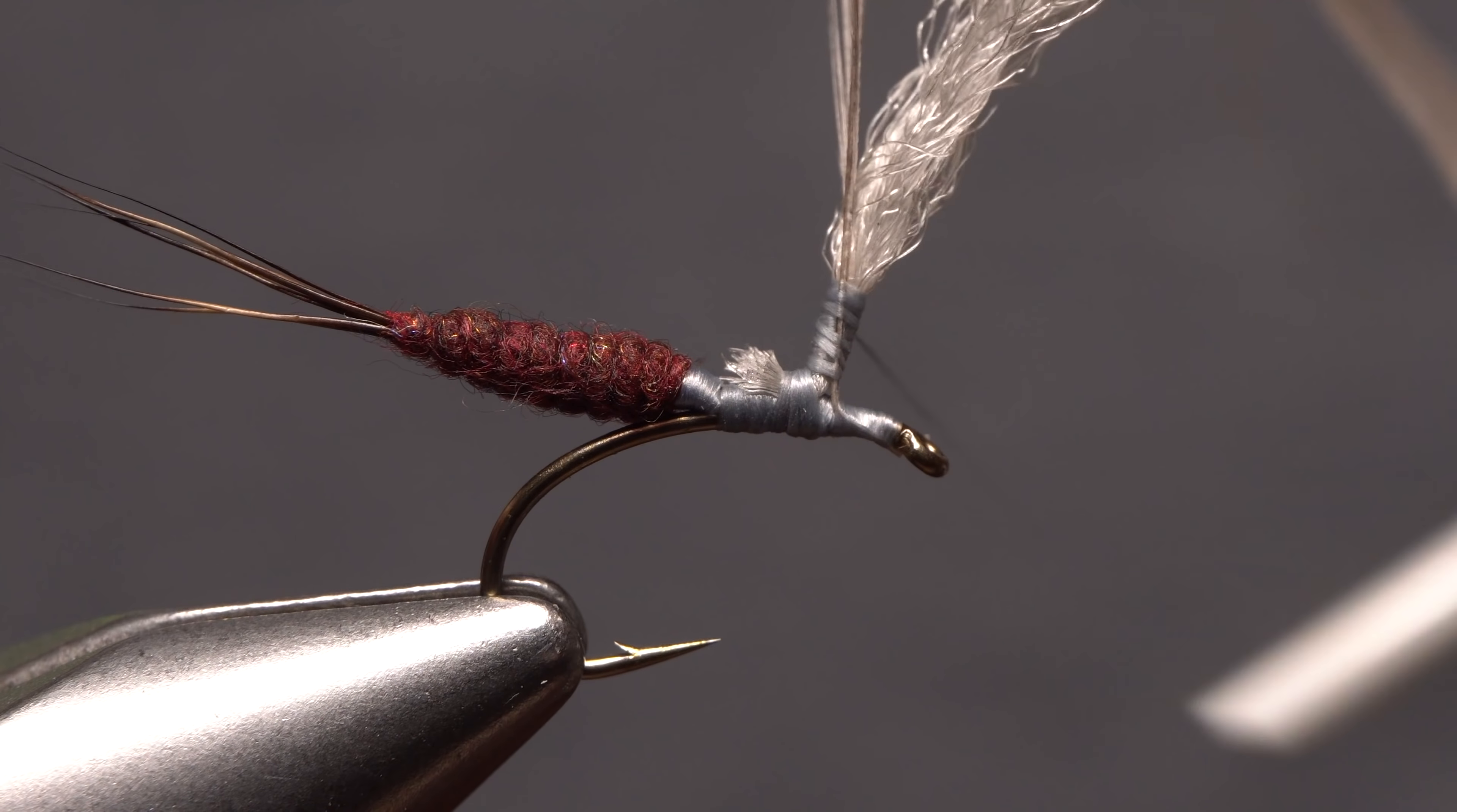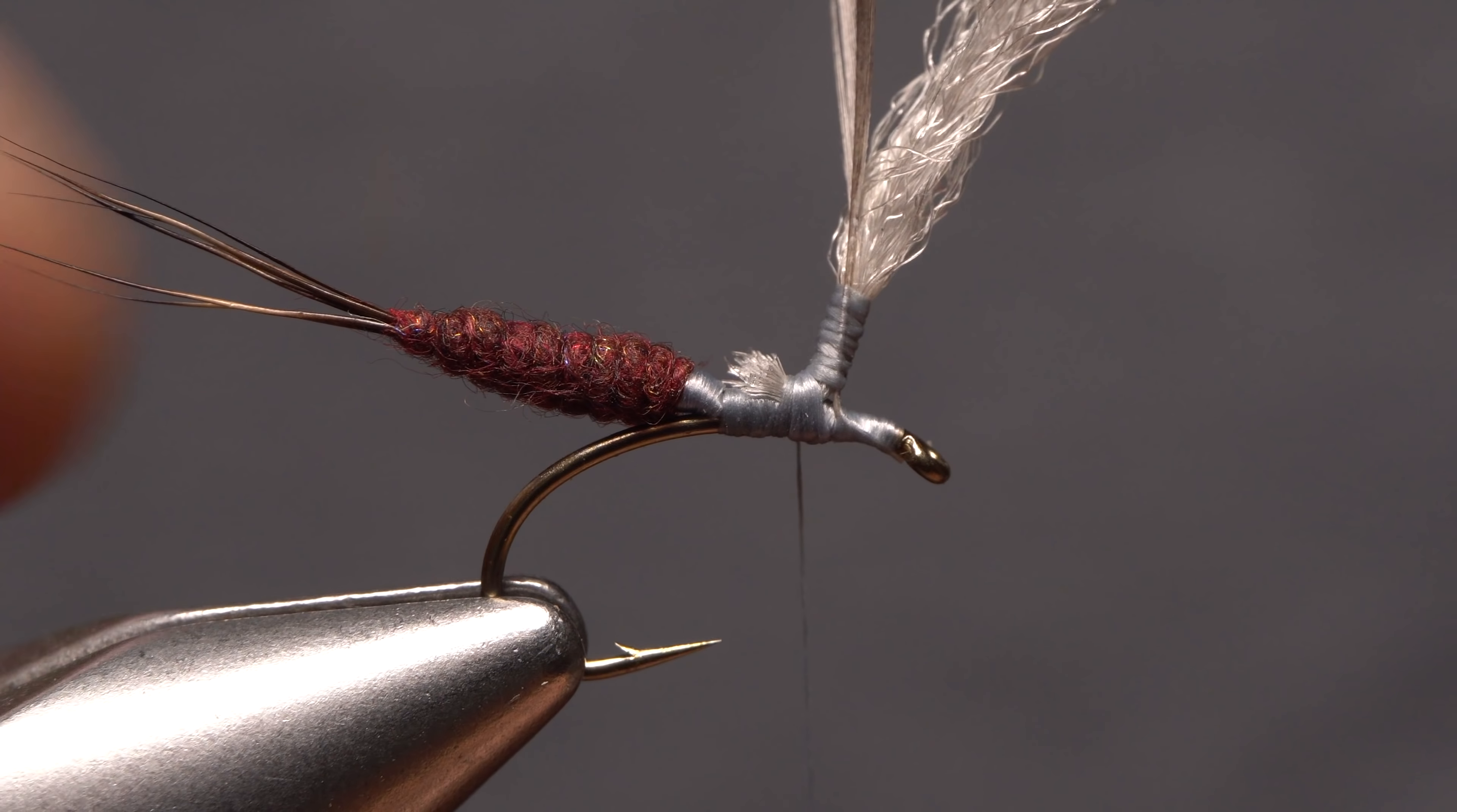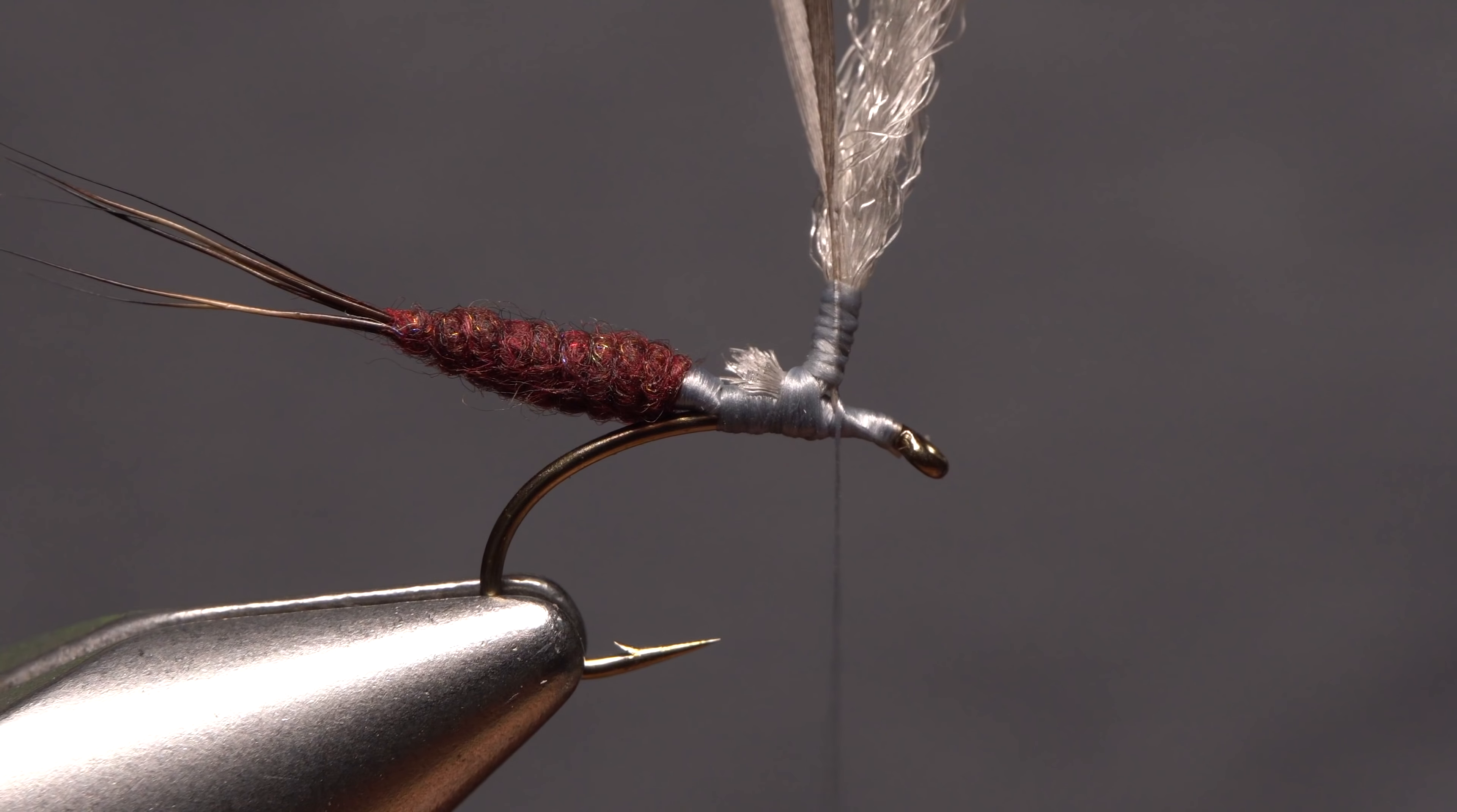Wrap down the post with your tying thread for the final time, making sure to get at least one full wrap around the body of the fly. End with your tying thread in front of the post.